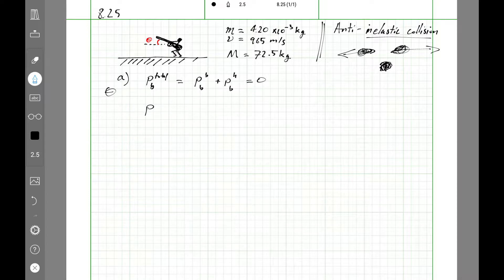By the way, in part A, theta is zero. So the hunter is just shooting horizontally. The total momentum after, that's what the A is for, equals the momentum of the bullet after plus the momentum of the hunter after. That's still going to be zero.